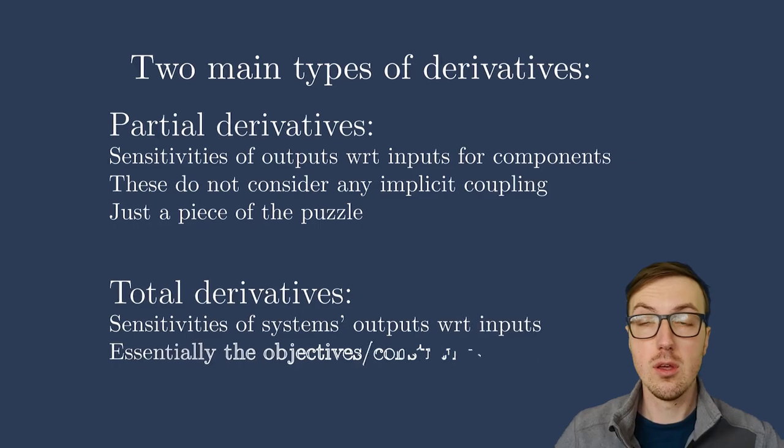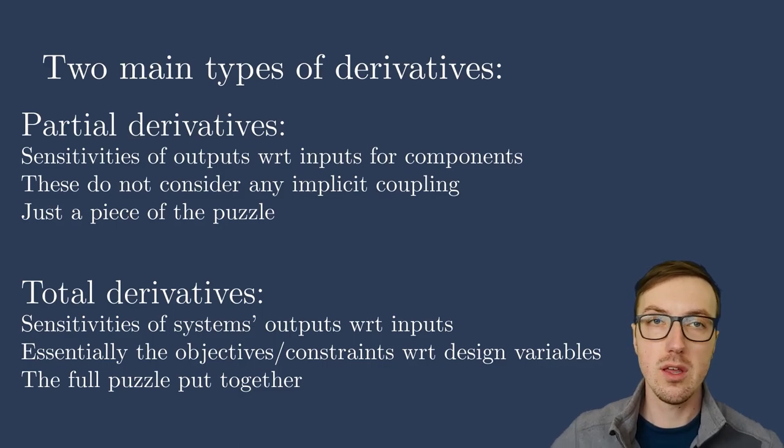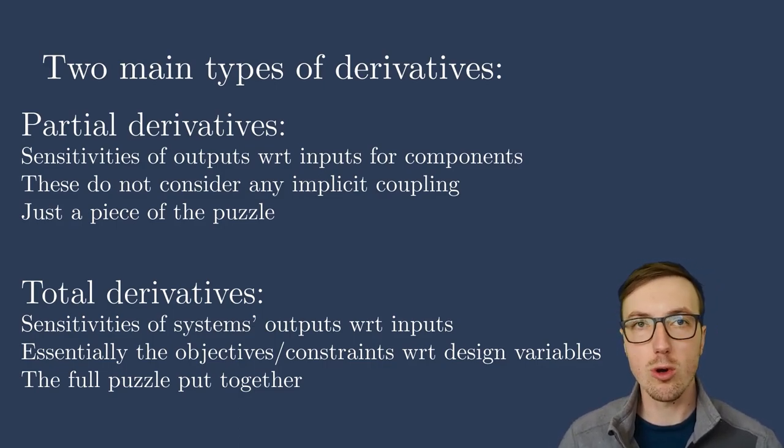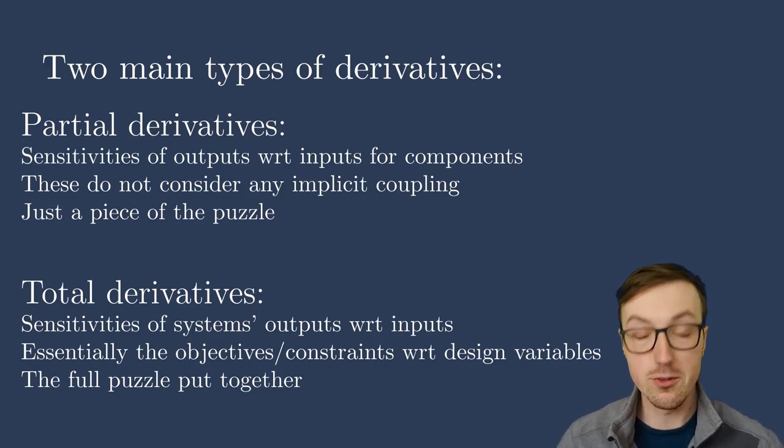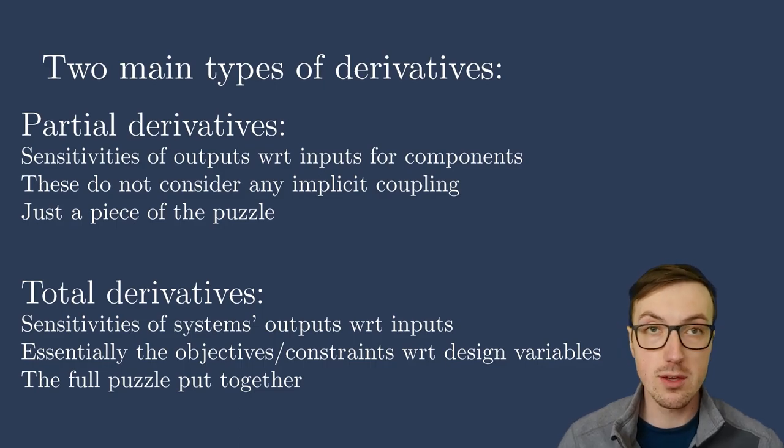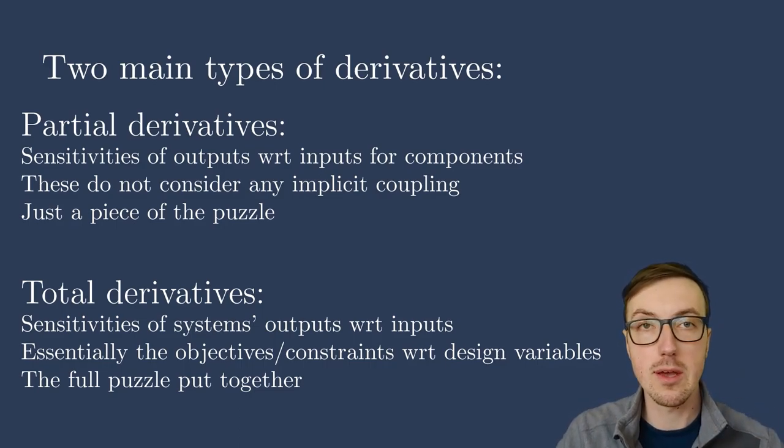Now let me introduce total derivatives. Total derivatives are the sensitivities of the entire system's outputs with respect to the system's inputs. In the case of optimization, this is what we care about, the functions of interest with respect to the design variables, so the objectives and the constraints with respect to the design variables. You can think of this as the full puzzle put together. This lets you see the full story of the system, its sensitivities, and by taking these little pieces, these partial derivatives, and combining them together, we can obtain the total derivatives, which we need for optimization.